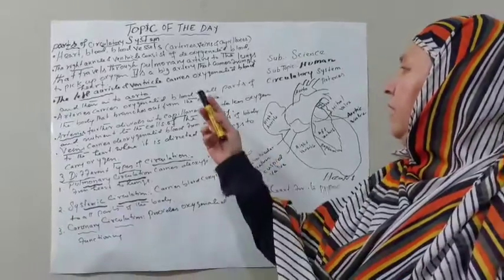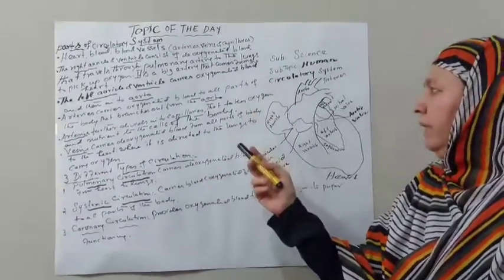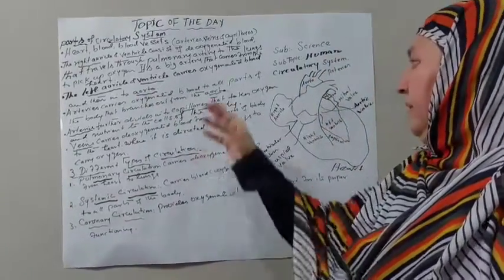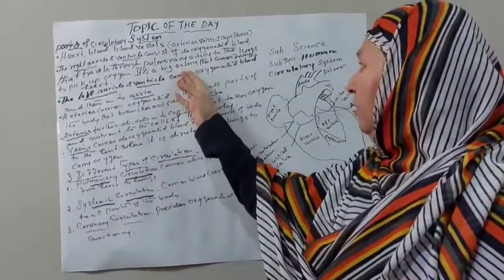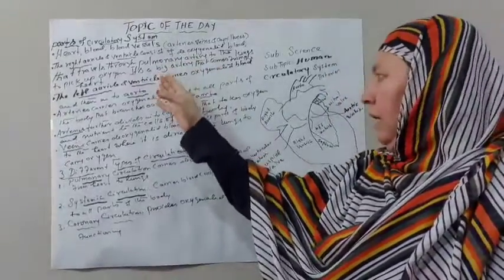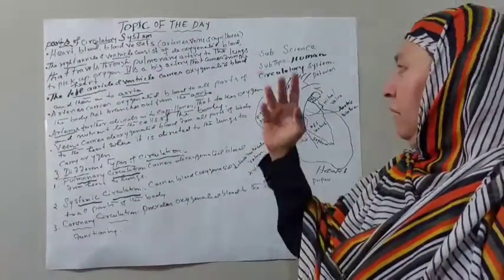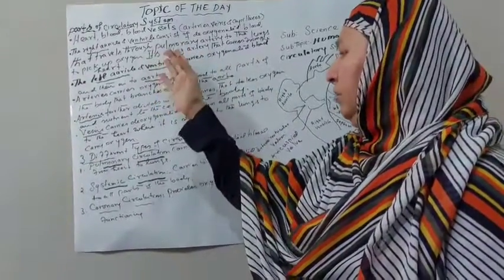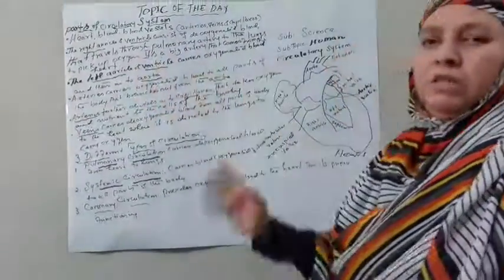Pulmonary artery is a big artery that comes from the heart. This artery is responsible to carry the deoxygenated blood to the lungs and drops the carbon dioxide to the lungs and picks up oxygen.